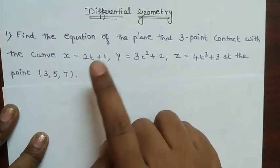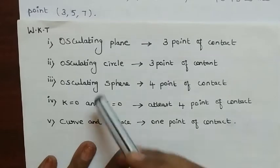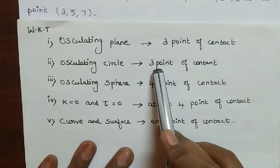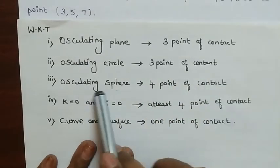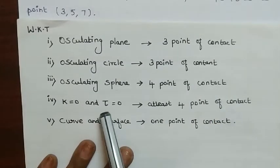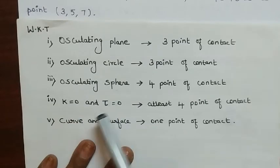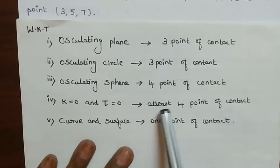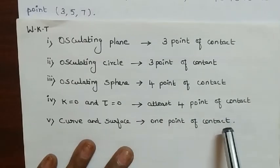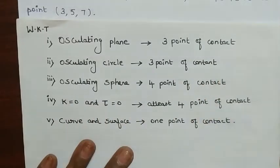Before seeing this problem, we look at some basic results. The osculating plane has 3-point contact. The osculating circle has 3-point contact. The osculating sphere has 4-point contact, where curvature k = 0 and torsion τ = 0. If both values are 0 then we have at least 4-point contact. A curve and surface has 1-point contact. We will see these results briefly in the next video.